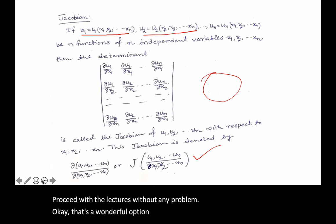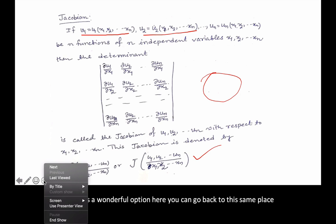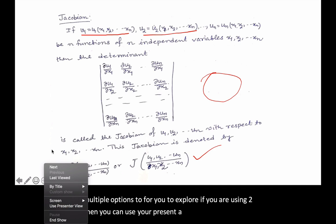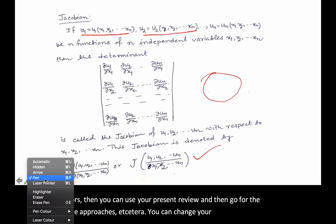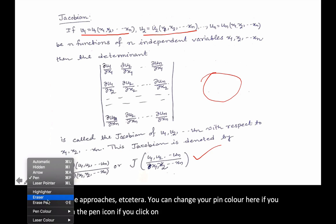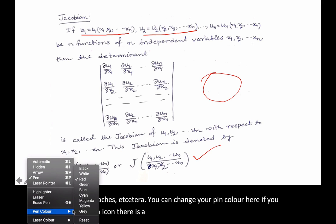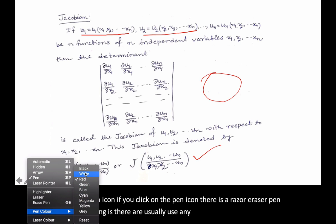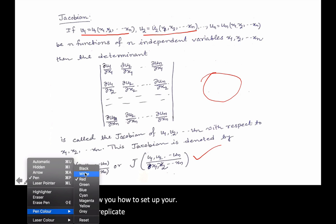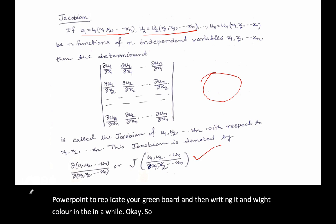You can go back to the same place — there are multiple options to explore. If you are using two monitors, you can use presenter view for multiple approaches. You can change your pen color by clicking on the pen icon — eraser, pen, pen color — everything is there. I'll show you how to set up your PowerPoint to replicate a green board and write in white color in a while. You can turn off the subtitles at any time by clicking that button again.